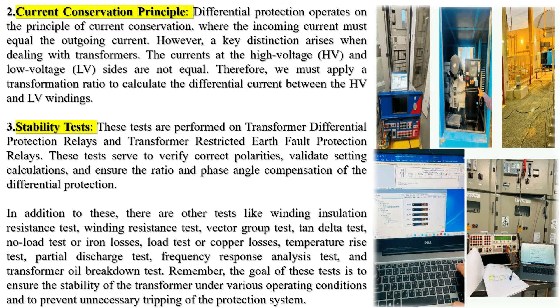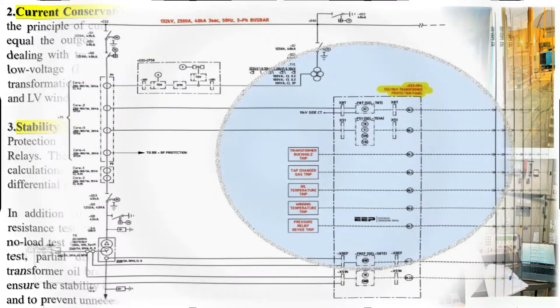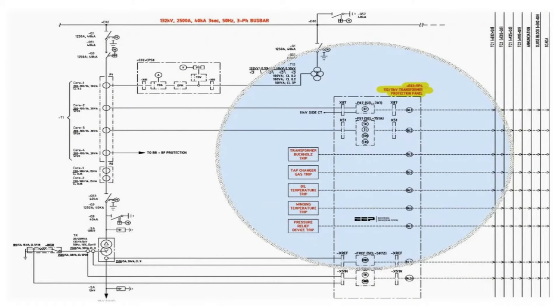Transformer Differential Protection is one of the primary methods for electrically safeguarding transformers. It operates as a unit protection scheme, meaning it responds only if the fault occurs within its designated protection zone. If the fault lies outside this zone, the differential protection should not trigger.